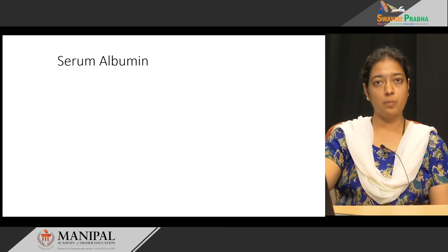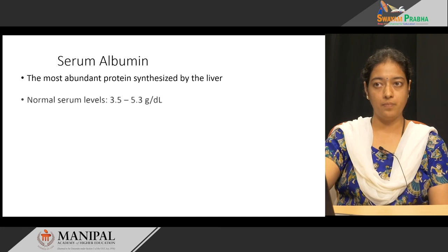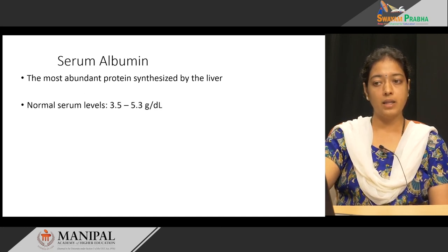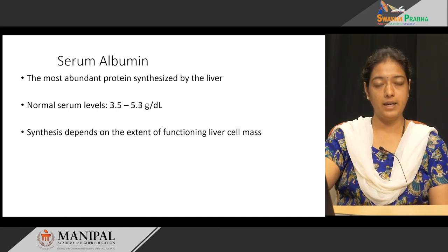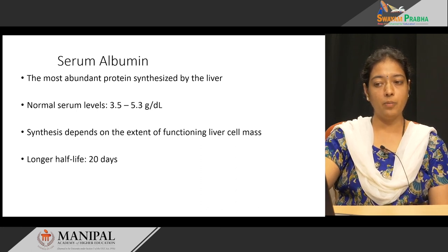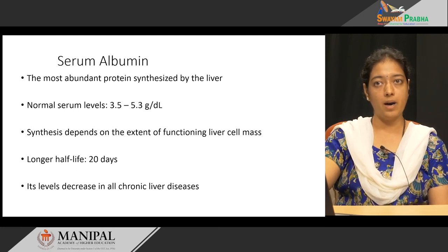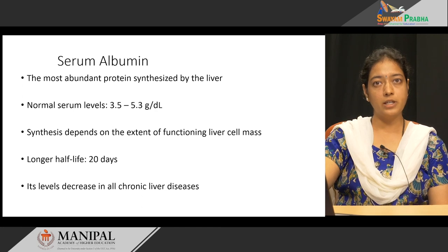The next blood test is serum albumin. Most proteins, including albumin, are synthesized by the liver. The normal concentration of serum albumin is 3.5 to 5.3 grams per deciliter. Since albumin synthesis depends on functioning liver cell mass and its half-life is 20 days, albumin is a marker for chronic liver disease. In acute liver disease, there is no sudden fall in albumin.